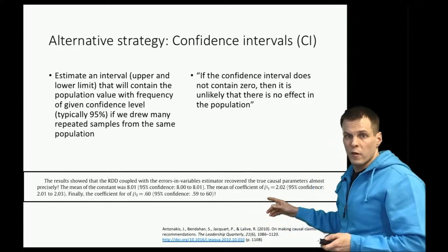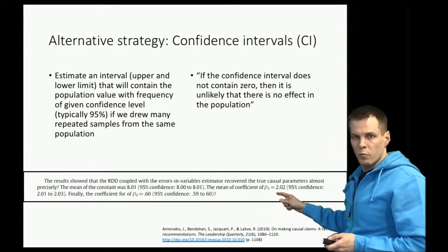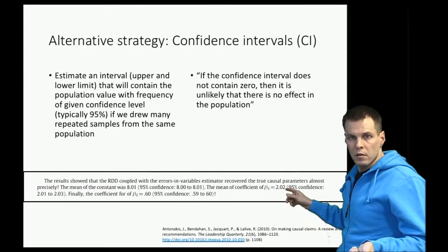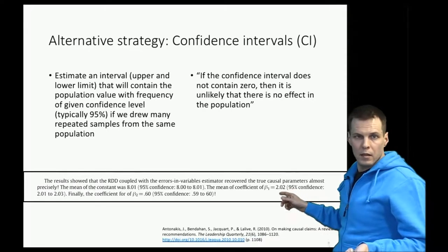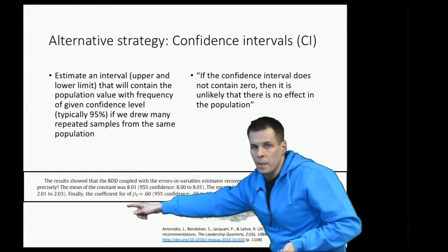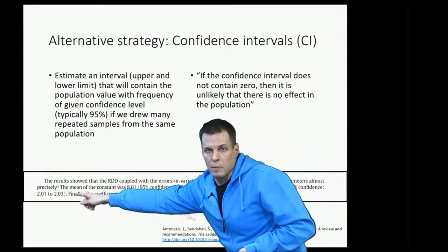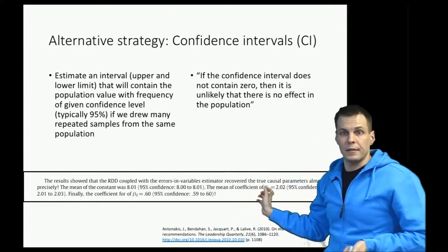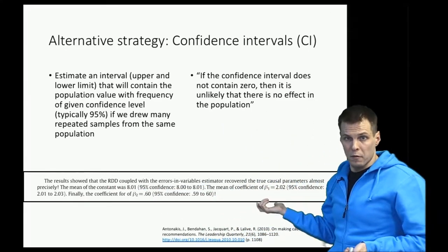Here's an example of a confidence interval. The estimate is 2.02, and we have one endpoint below the estimate which is 2.01, and another endpoint above the estimate which is 2.03. So that's an interval that says something about the precision of the estimate.